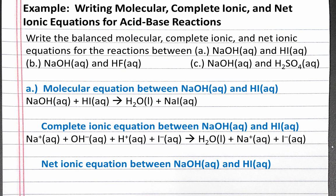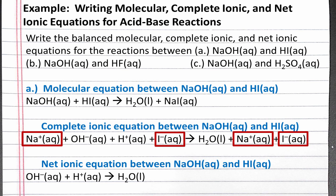To write our net ionic equation, we're going to eliminate the spectator ions from the complete ionic equation. The sodium ion shows up on both sides of the equation, and the iodide ion shows up on both sides of the equation. So our net ionic equation is hydroxide plus H⁺ produces water. And these are our molecular, complete ionic, and net ionic equations for the reaction between sodium hydroxide and hydroiodic acid.